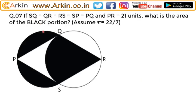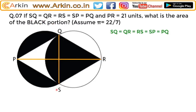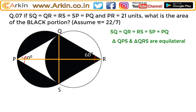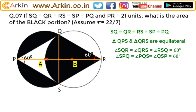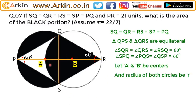It is given that SQ equals QR equals RS equals SP equals PQ, and PR equals 21 units. Because all the sides are equal, these two triangles will be equilateral, and because they are equilateral, each angle will be 60 degrees. Let us assume A as the center of this circle and B as the center of this circle. If the radius of the circle is r, this is the radius.